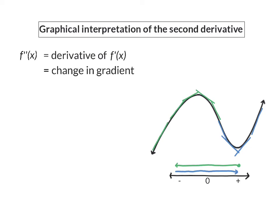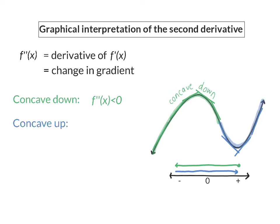This change in the gradient of the curve is called the concavity of the curve. The first part of this curve where the gradient became smaller and smaller is called concave down. This is when the second derivative is smaller than zero because the change in gradient is negative. The second part where the gradient becomes more and more positive is called concave up, and this is when the second derivative is bigger than zero because the change in gradient is positive.